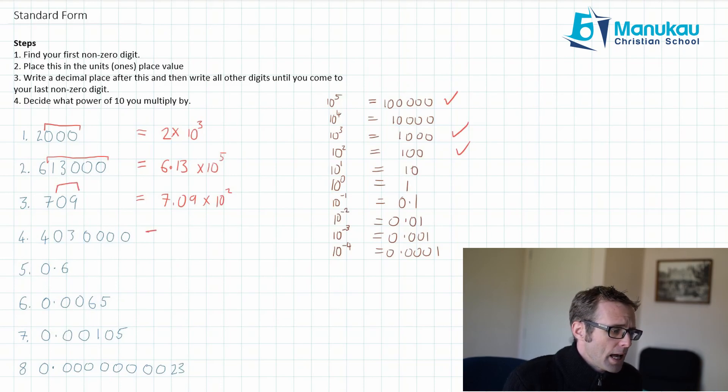Next one. I have 4,000,000 and 30,000. So I'm going to write 4 and I put my decimal place. I go to my last non-zero digits, so 4.03. Then since I'm in the millions place, I'm going to be timesing by 10 to the power of 6. I do a quick check. 3, 4, 5, 6. Are there 6 digits after the 4? Yes, there are. I'm correct.